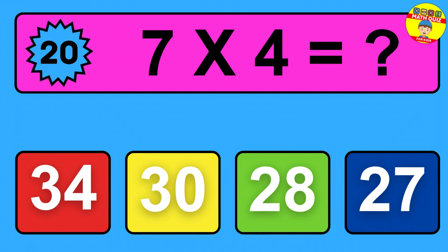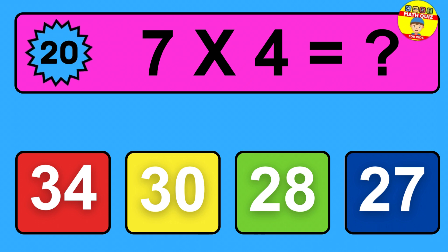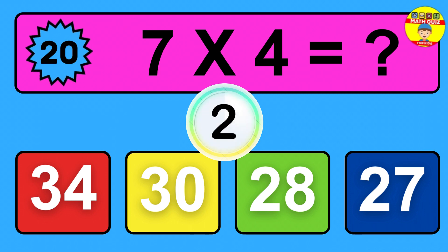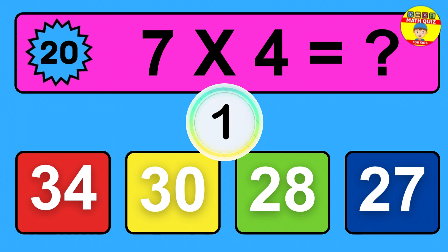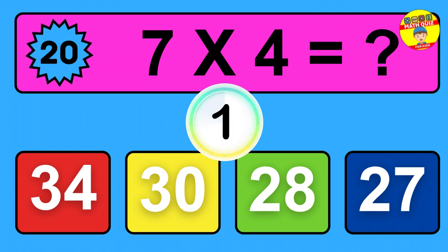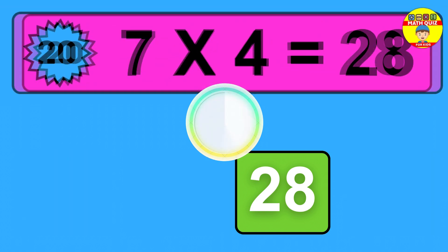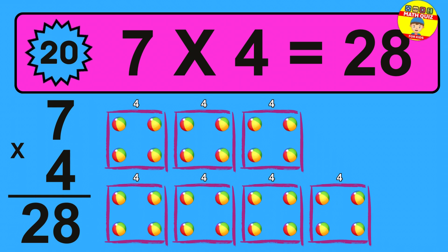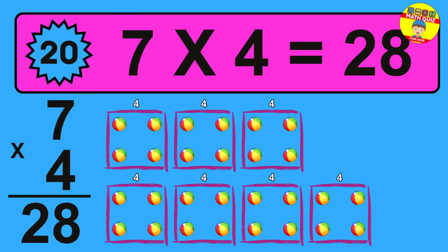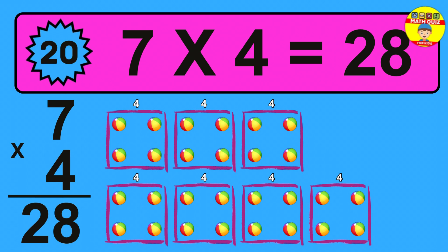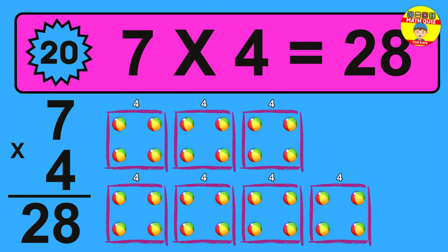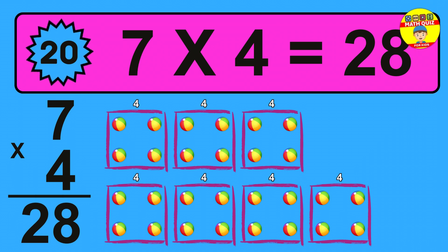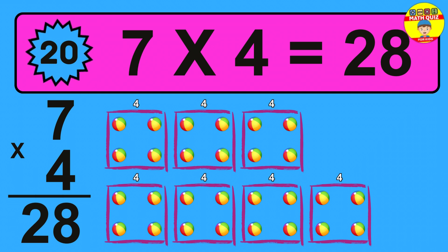Question 20: 7 times 4 equals what? The answer is 7 times 4 is 28. To calculate, we have 7 groups with 4 balls each one. So how many balls do we have? 28 balls.